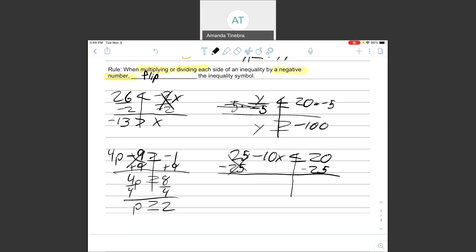Now, I'm subtracting 25. But this is a subtraction. It's not multiplying or dividing by a negative number. My symbol stays the same. 20 minus 25 is negative 5. And I have negative 10x.